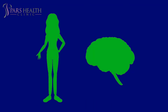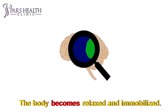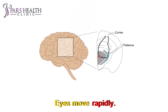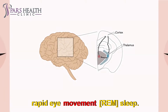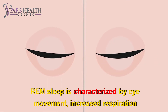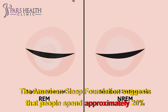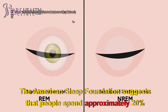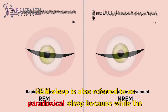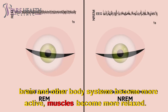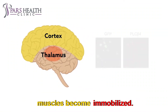REM Sleep: During REM sleep, the brain becomes more active, the body becomes relaxed and immobilized, and dreams occur. Most dreaming occurs during this fourth stage of sleep, known as rapid eye movement REM sleep. REM sleep is characterized by eye movement, increased respiration rate, and increased brain activity. The American Sleep Foundation suggests that people spend approximately 20 percent of their total sleep in this stage. REM sleep is also referred to as paradoxical sleep because while the brain and other body systems become more active, muscles become more relaxed, and voluntary muscles become immobilized.